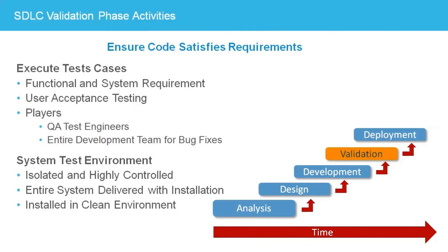The development team will modify the software to fix the defects as they are received. When enough bugs have been fixed to warrant a new version of the software, a new baseline is established and used to build a new revision, which is delivered to the QA team. Once the new software is installed, the testers must do a round of regression testing, rerunning all previous tests to ensure the modifications did not break working code. When a previously recorded defect no longer occurs in the new revision of the code, the QA team closes the defect. At any time, the number of open defects is a metric that indicates the stability of the application and how well it satisfies the requirements.